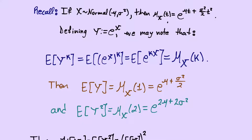If X is a normally distributed random variable, the moment-generating function of X evaluated at t is M_X(t) = exp(μt + σ²t²/2). This is not very easy to prove, but it is fairly standard for a first probability course. You may need to memorize it, because it is very useful.